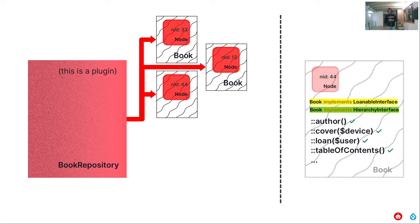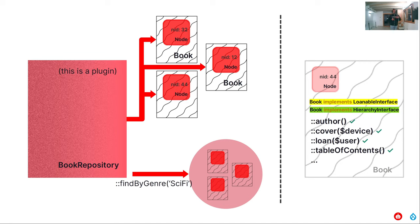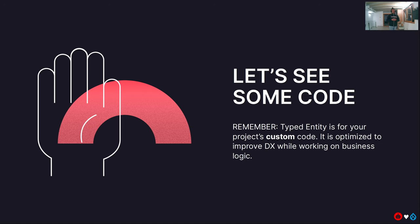The repository, in addition to being a factory for creating book objects, also has responsibilities of its own — like finding all books by genre — and it returns book objects, not node objects. This presentation is called Write Better Code, so let's see some more code. But before we do, remember we're trying to achieve some of the SOLID principles of maintainable code while also balancing pragmatism.